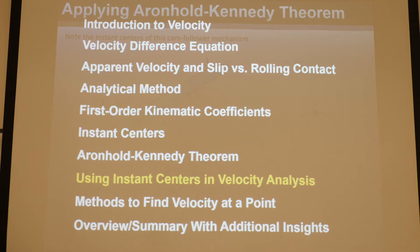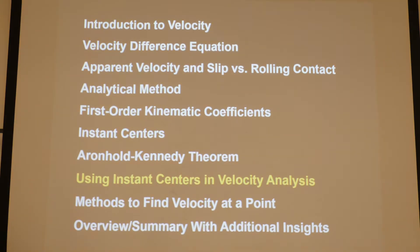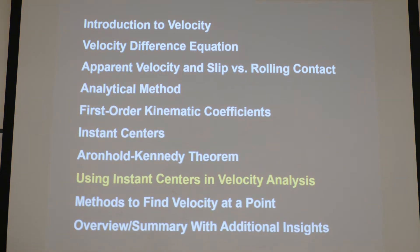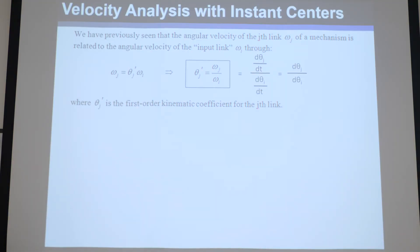Now the question is: now that we know how many instant centers a mechanism has, and how to find the obvious and non-obvious ones, what do we do with them to perform velocity analysis? That's the next topic.